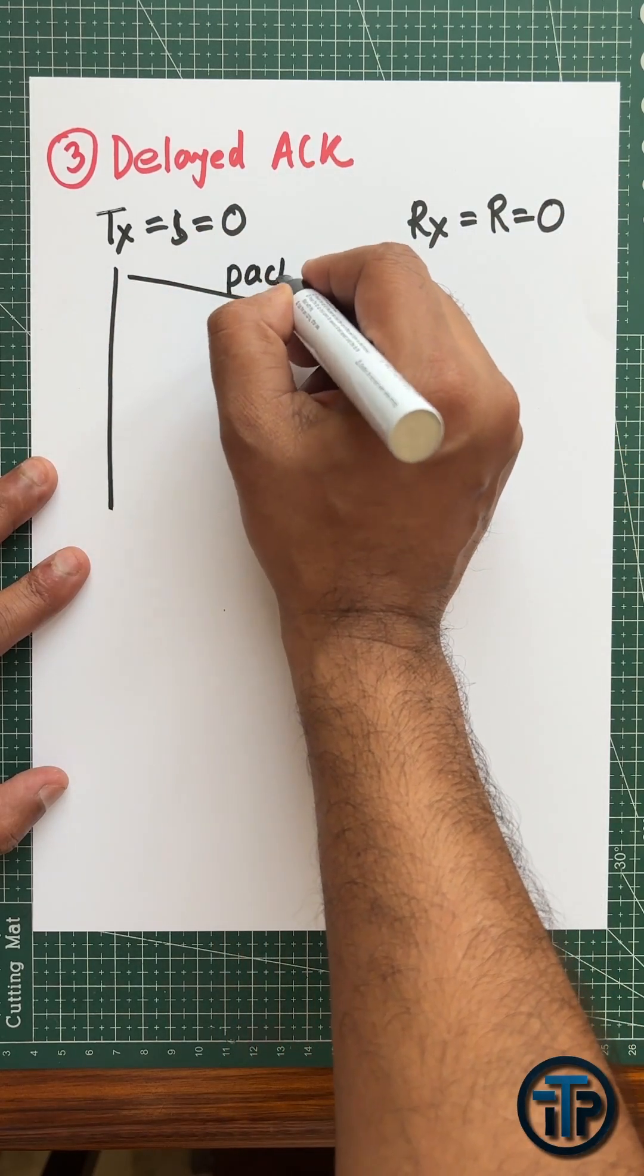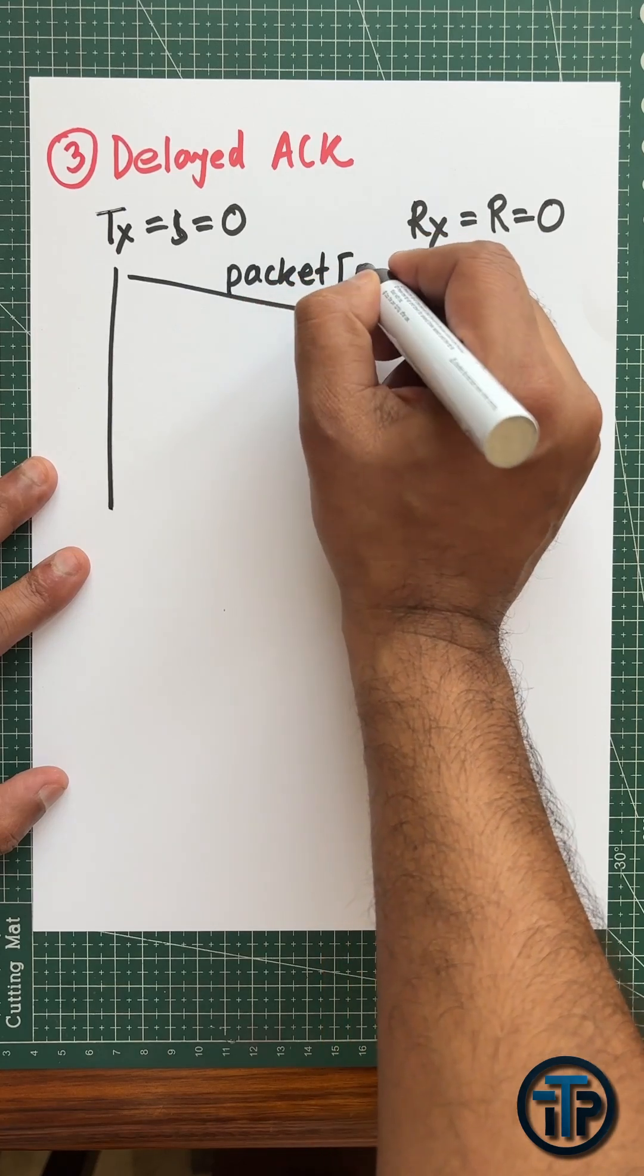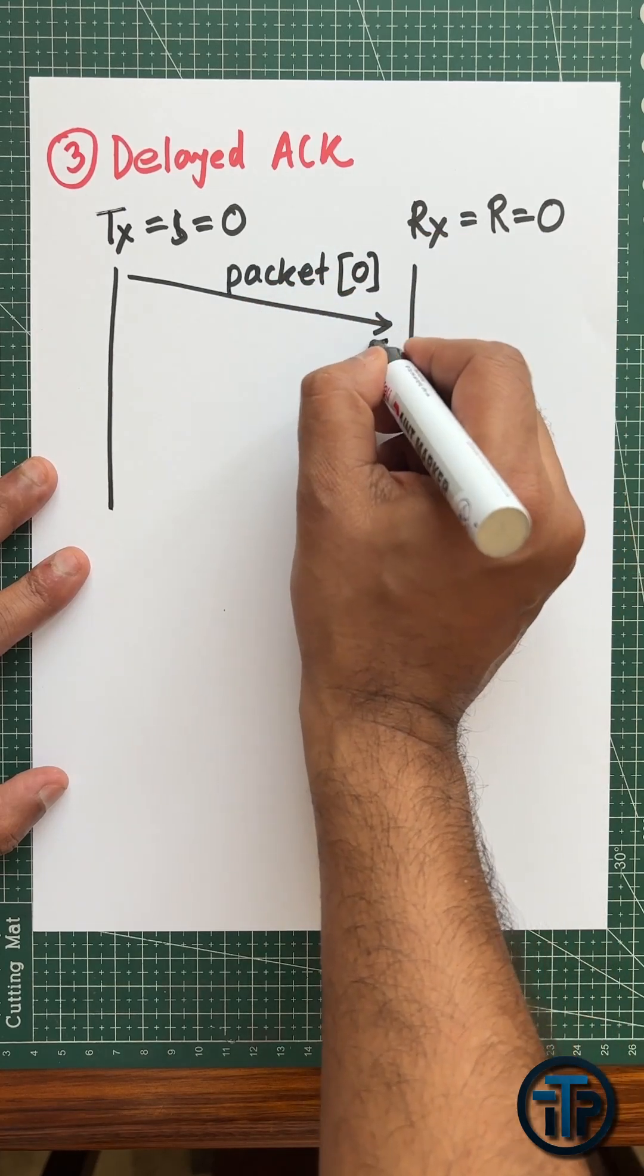From the transmitter end we are sending one packet p equals to zero. And in the receiver side it is sending the acknowledgement, indexed by a value of one.